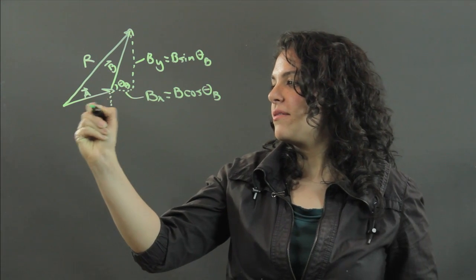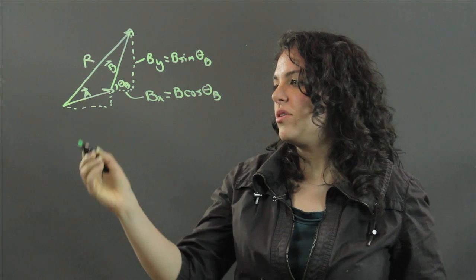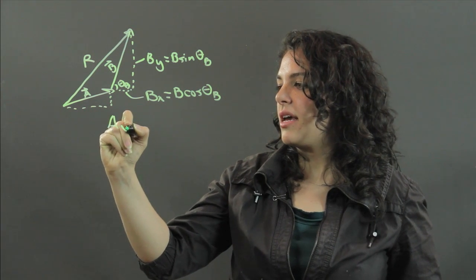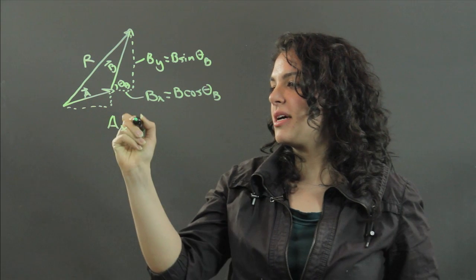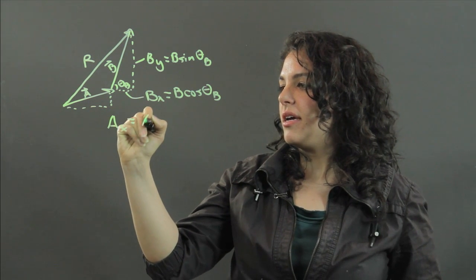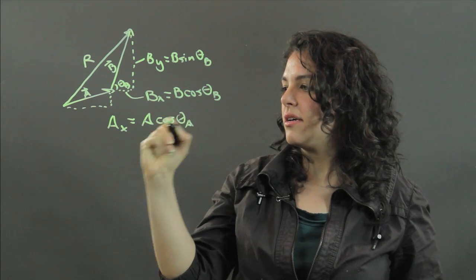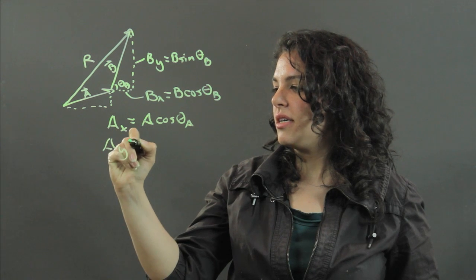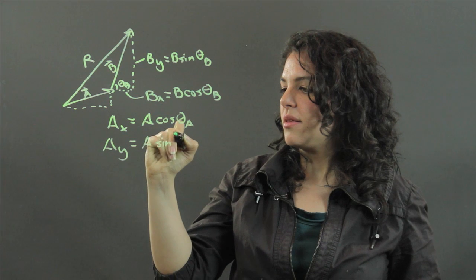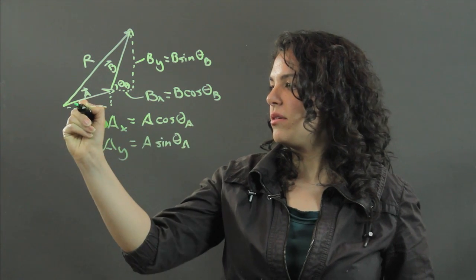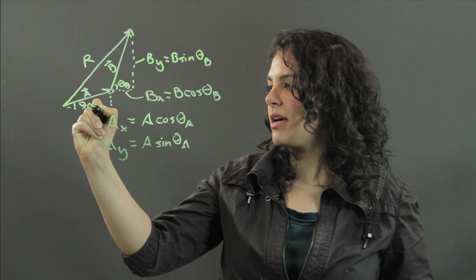And then we have a similar breakdown for a sub x and a sub y. So a sub x equals a cosine theta a, and a sub y equals a sine theta a, where this is your theta a.